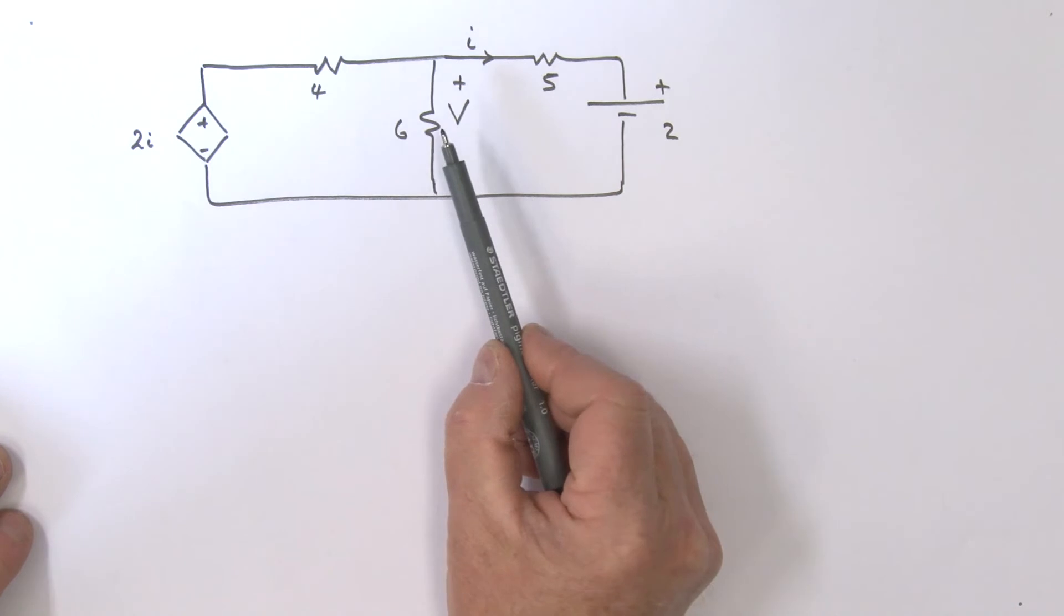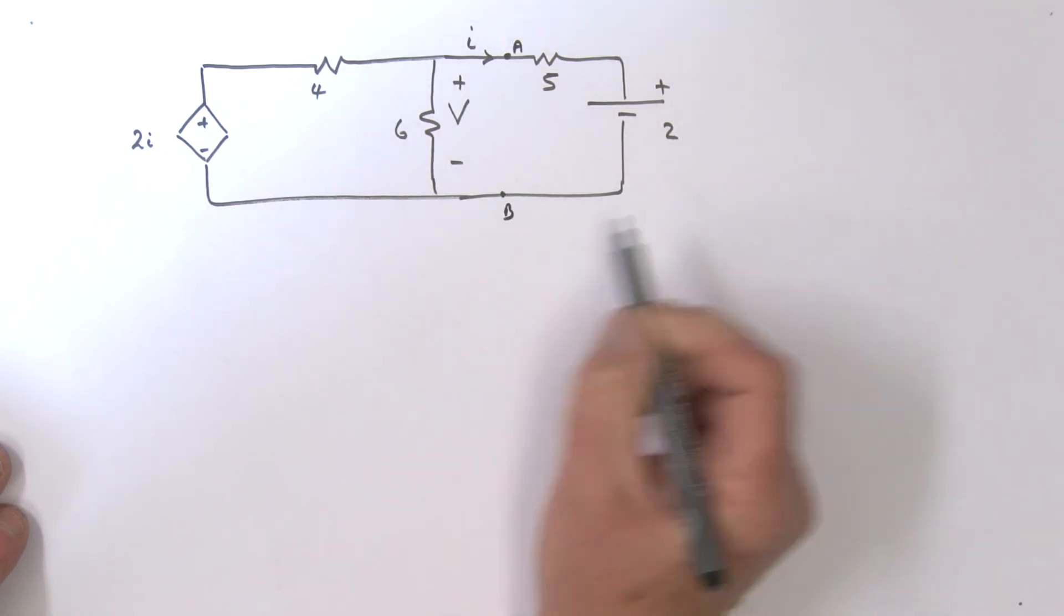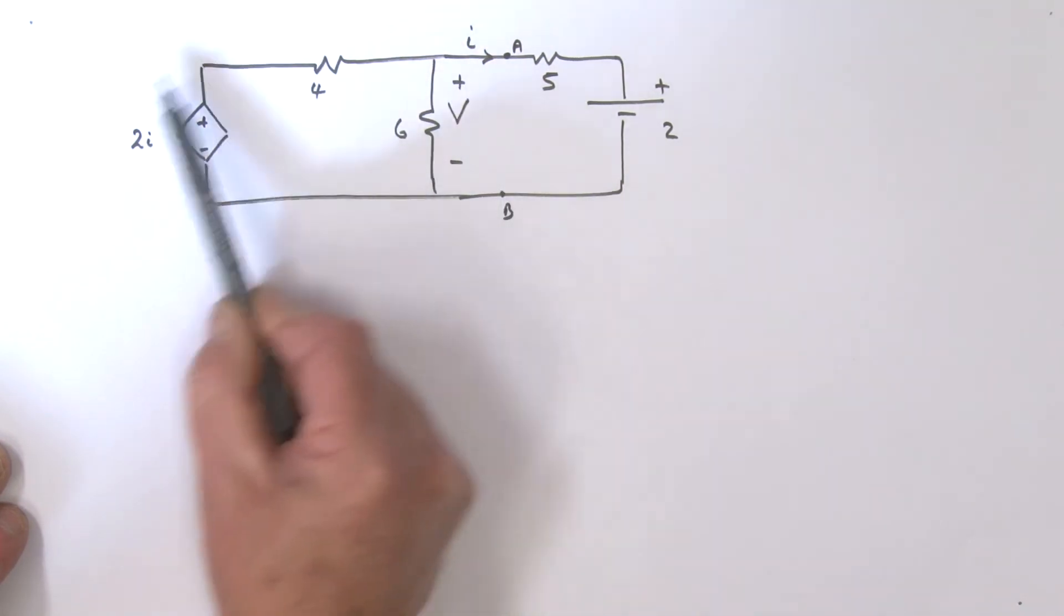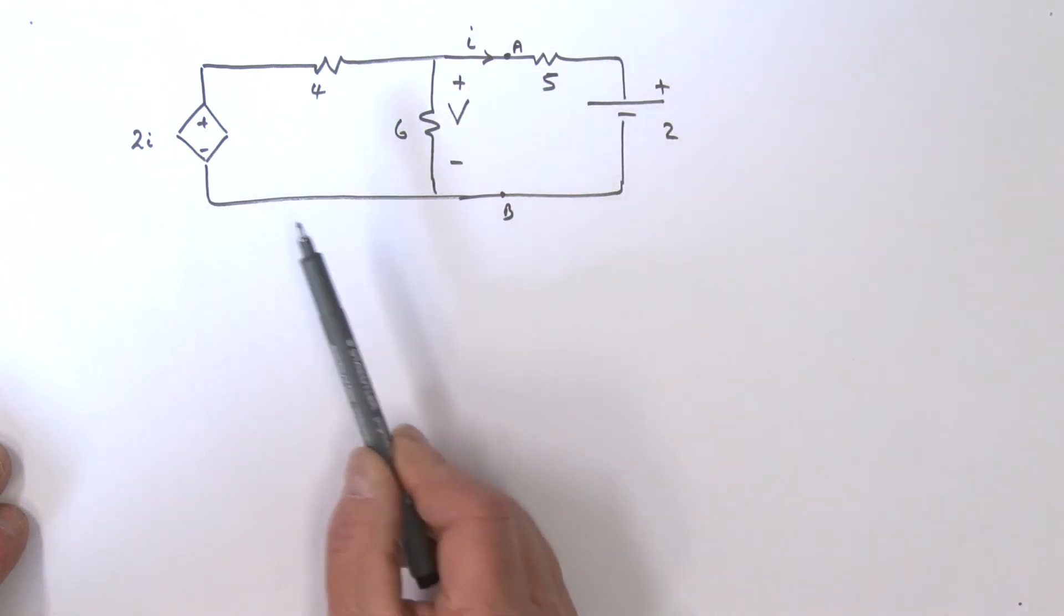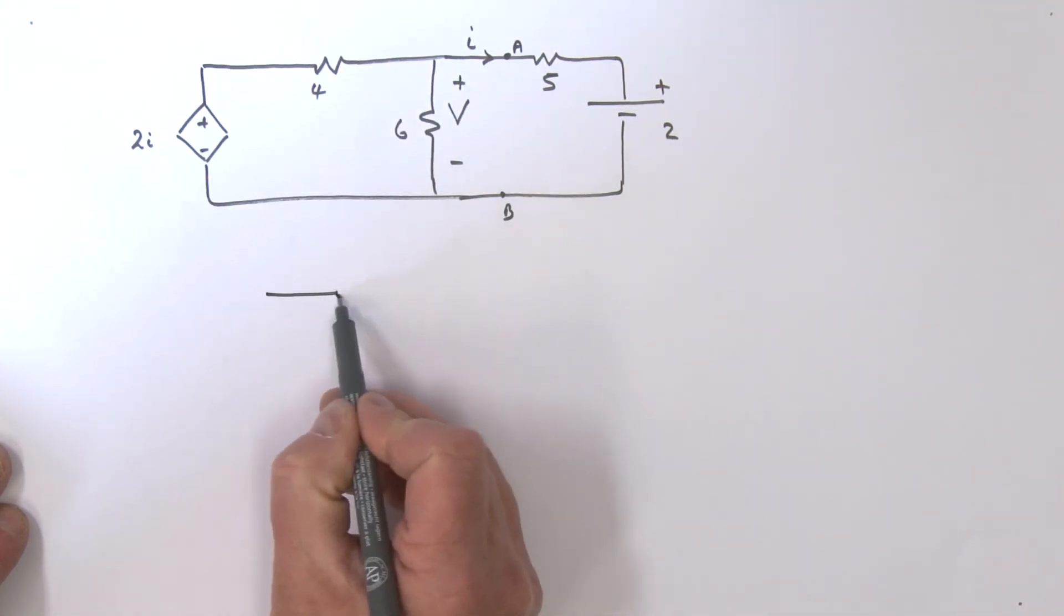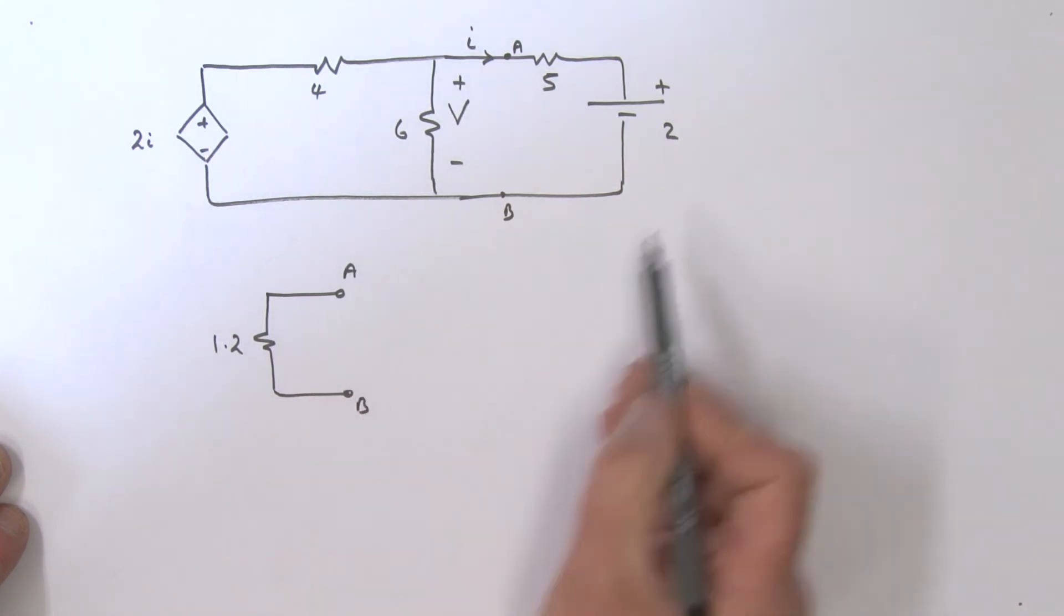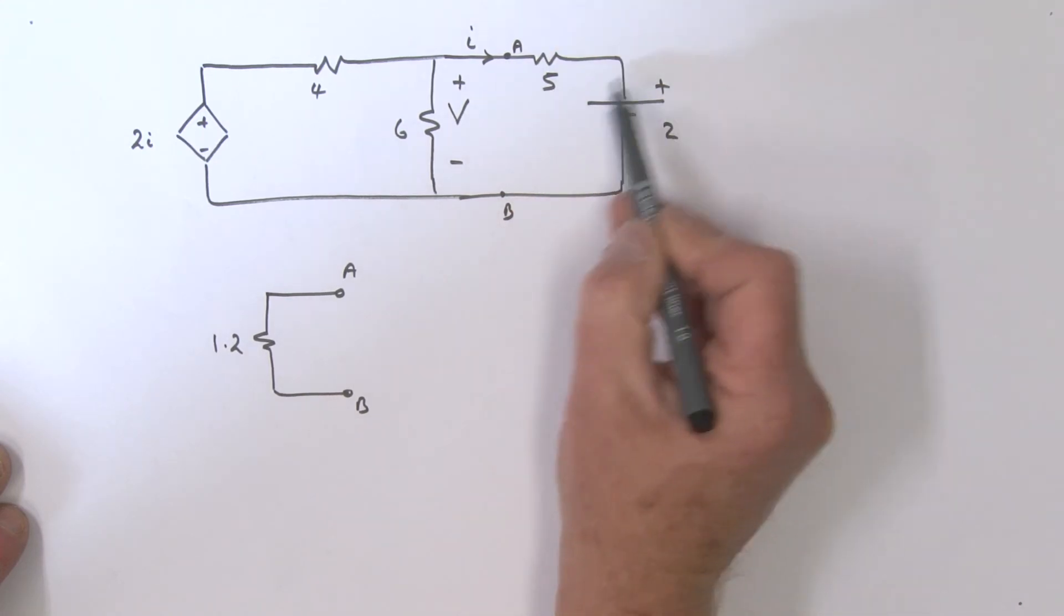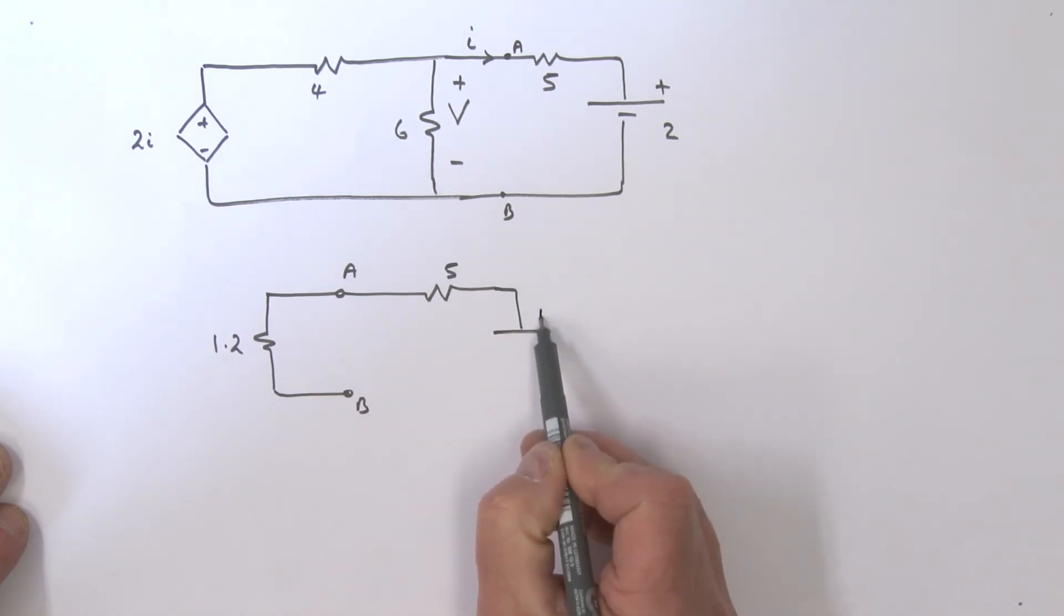Now let's use the Thevenin approach. We're going to call this terminal A and this terminal B. If you remember from the previous module, we'd actually Thevenized this. We're going to replace this with that Thevenin equivalent. Basically, all of this was replaced with a single resistor. The value of that resistor was 1.2 ohms. There are my terminals A and B. Then I'll reattach my load, which is this 5 ohm and voltage source, so we'll put that back in. There it is, 5, and we've got our 2 volts sitting here.